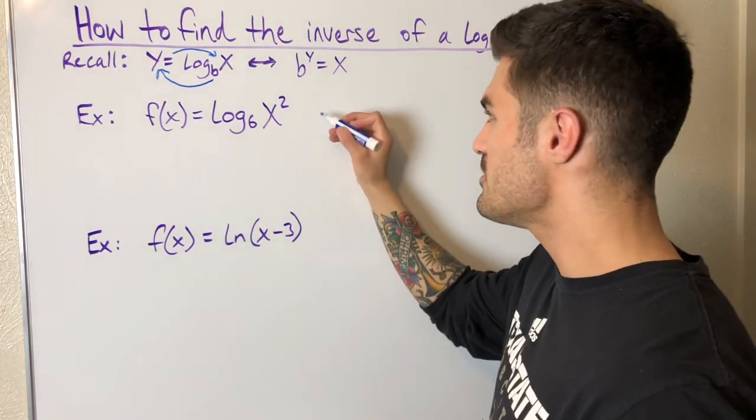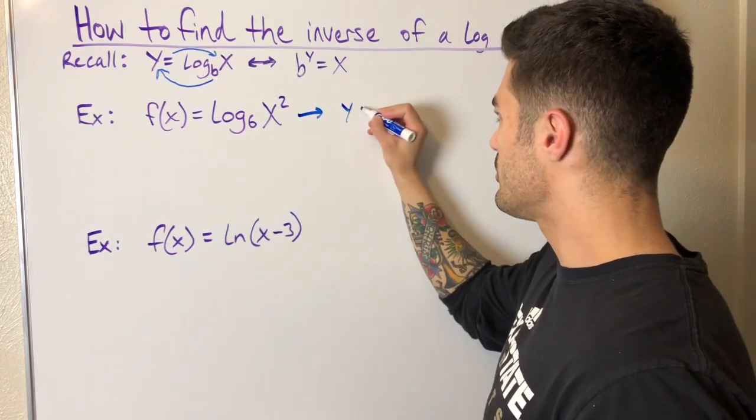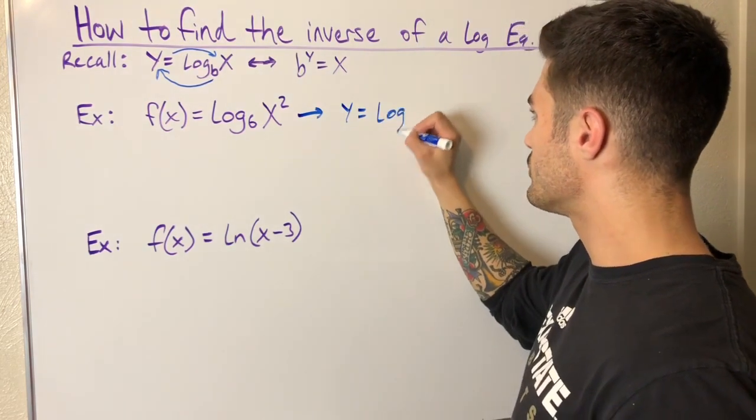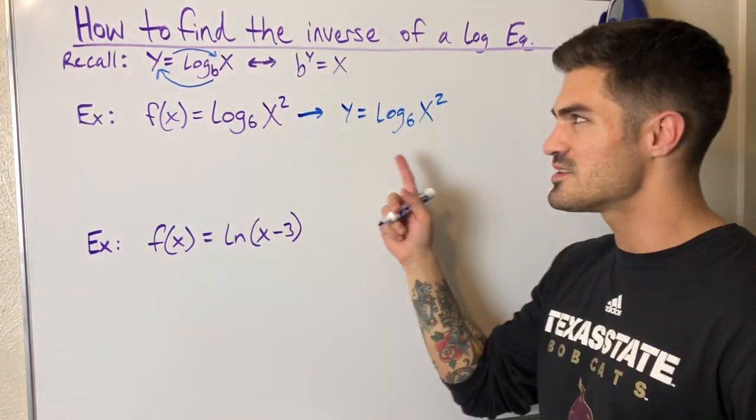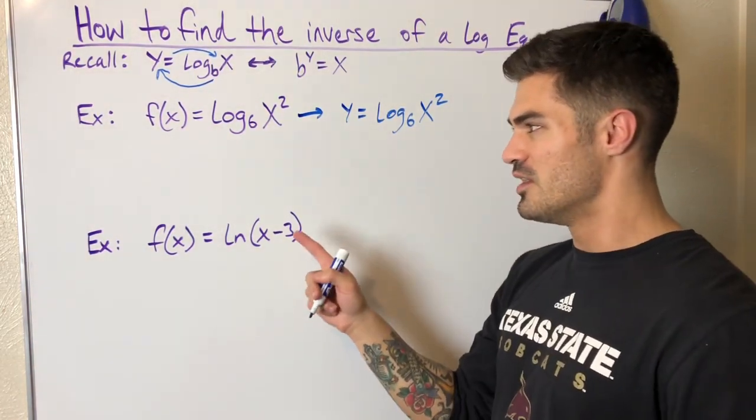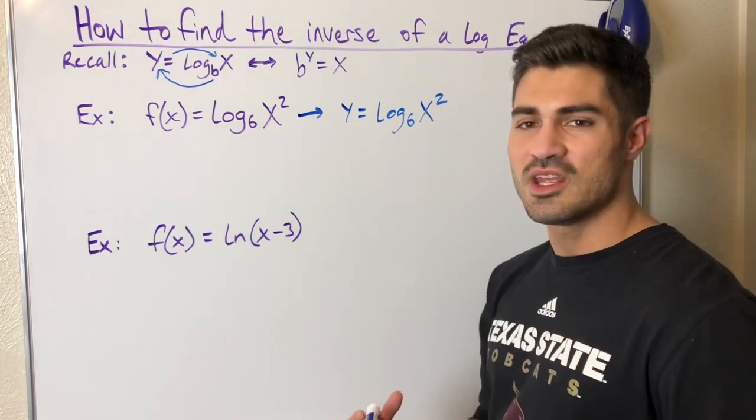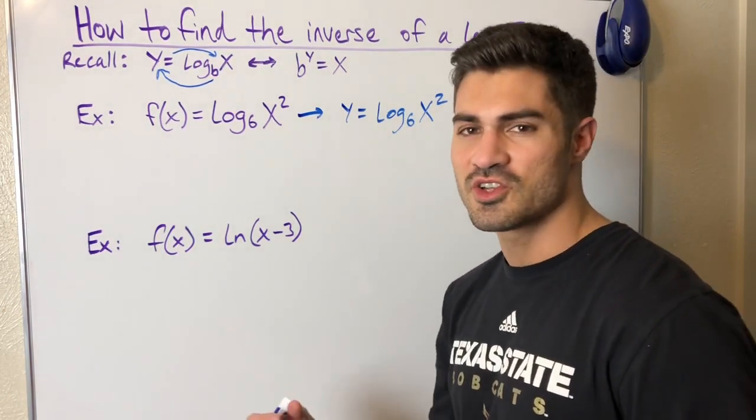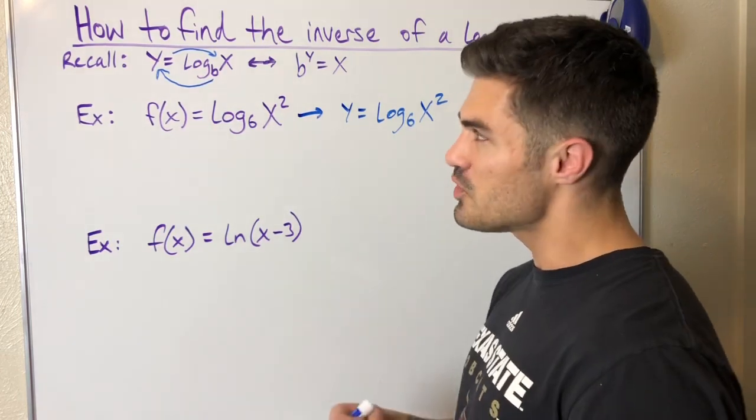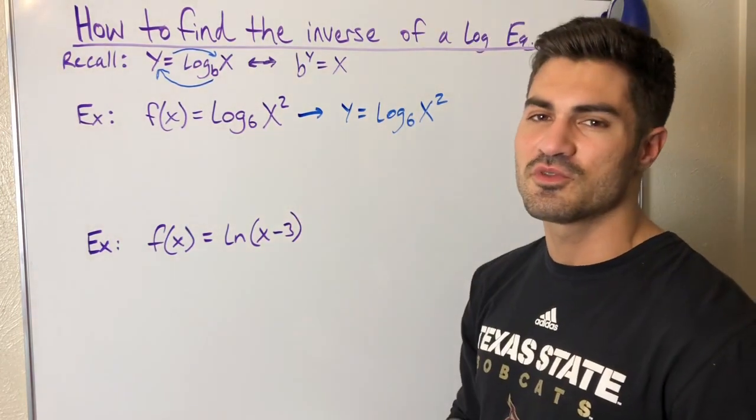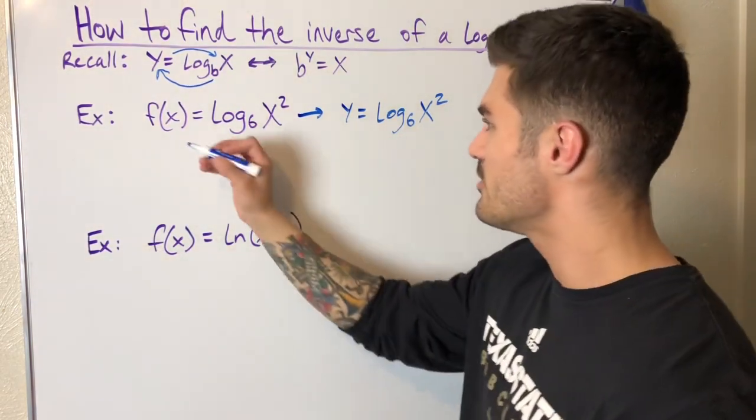Replace f(x) with y. We get y equals log base 6 of x squared. By the way, what can we guess that the inverse of this function is going to be? It's definitely going to be some kind of exponential function, just like the inverse of an exponential function is going to be some kind of logarithmic function. They are inverses of each other. We just want to know that specific exponential function. So we're going to switch the position of x and y.